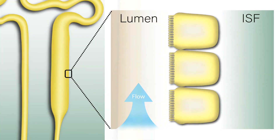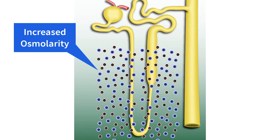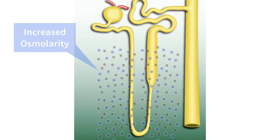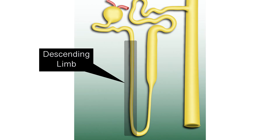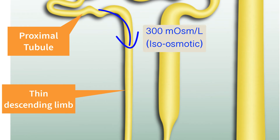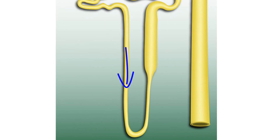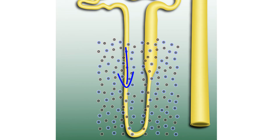The net effect of the reabsorption of these ions is to increase the osmolarity of the interstitial fluid. This increased osmolarity facilitates water reabsorption in the descending limb of the loop of Henle. The tubular fluid leaving the proximal tubule is roughly isoosmotic to blood plasma, around 300 milliosmoles per liter. As it travels down the descending limb, it is exposed to the hyperosmotic interstitial fluid created by solute reabsorption at the thick ascending limb.